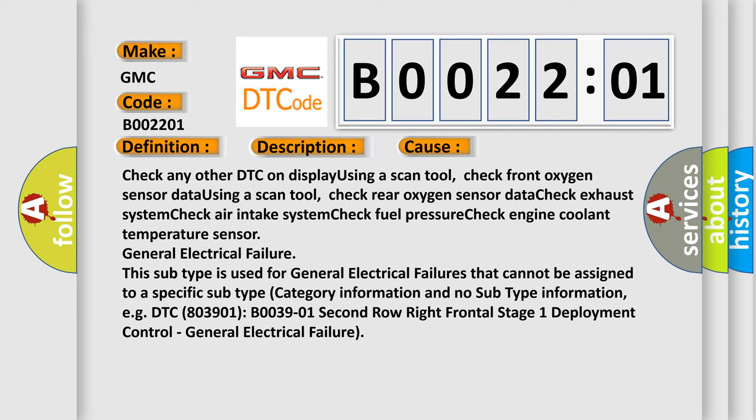This subtype is used for general electrical failures that cannot be assigned to a specific subtype category. Information and no subtype information. For example, DTC B003901, second row right frontal stage 1 deployment control, general electrical failure.